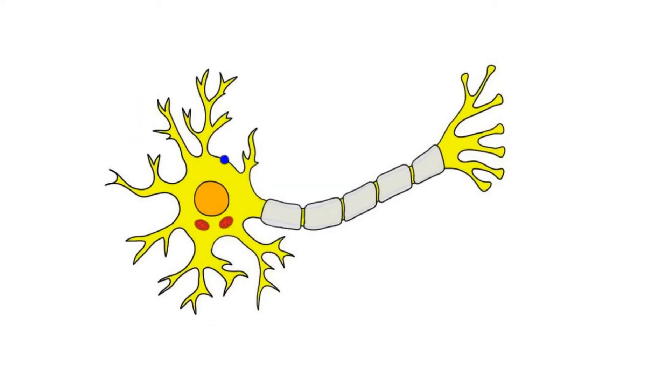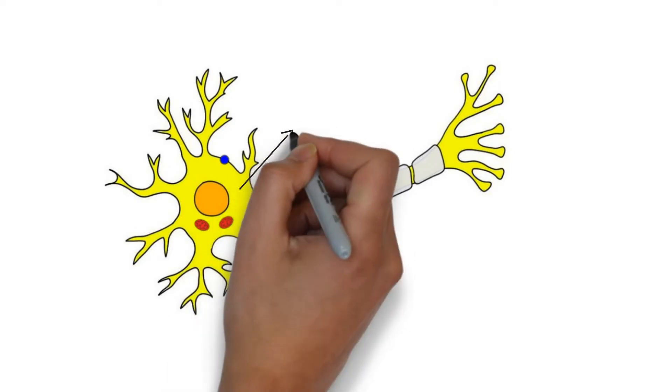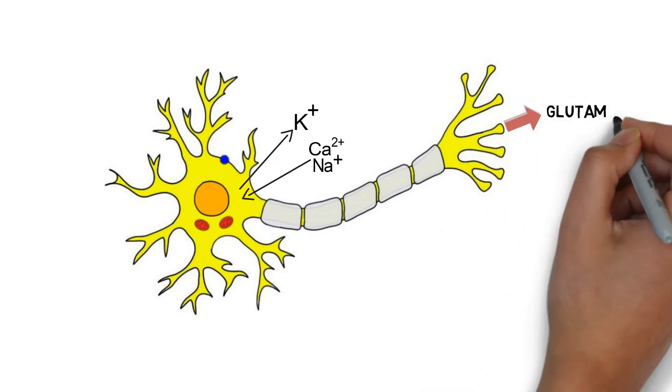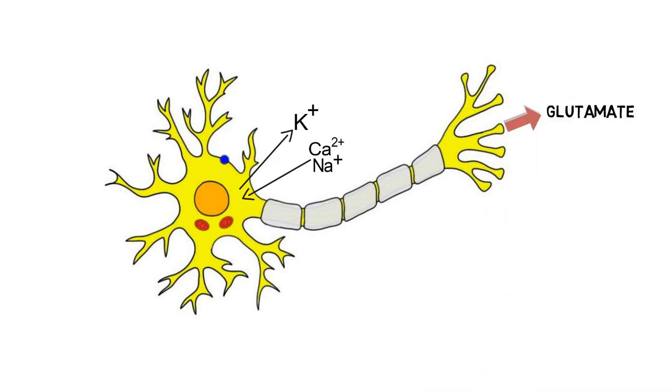When neuronal membranes are disrupted, it can cause the dysregulated flow of ions into and out of the cell, as well as the increased release of excitatory neurotransmitters like glutamate, which leads to further disruptions in ionic balance and a general inhibition of neuronal activity.